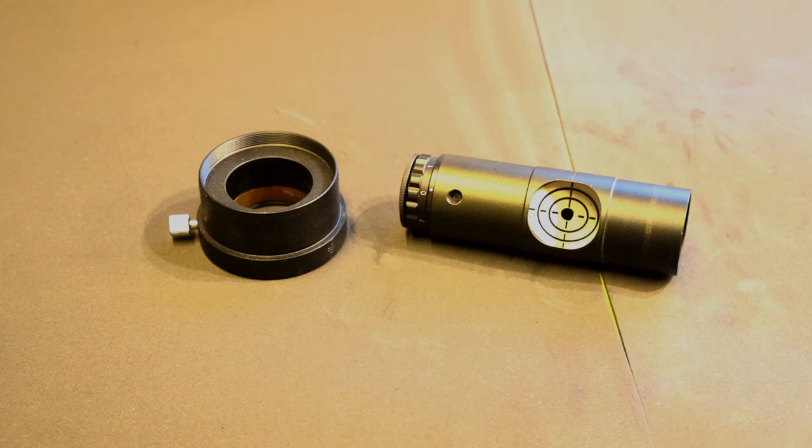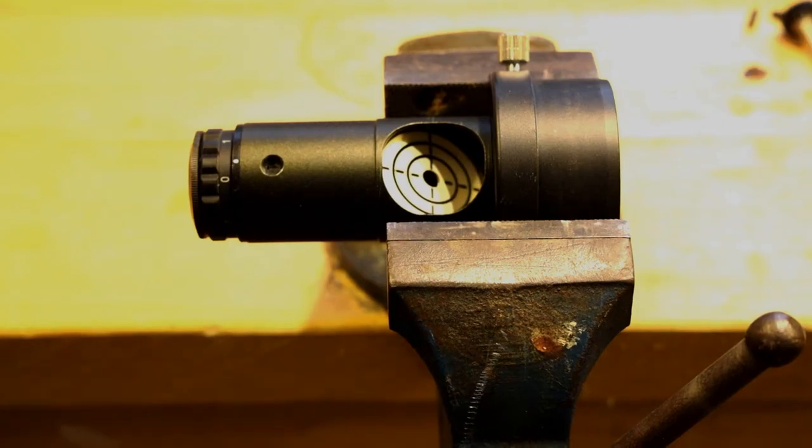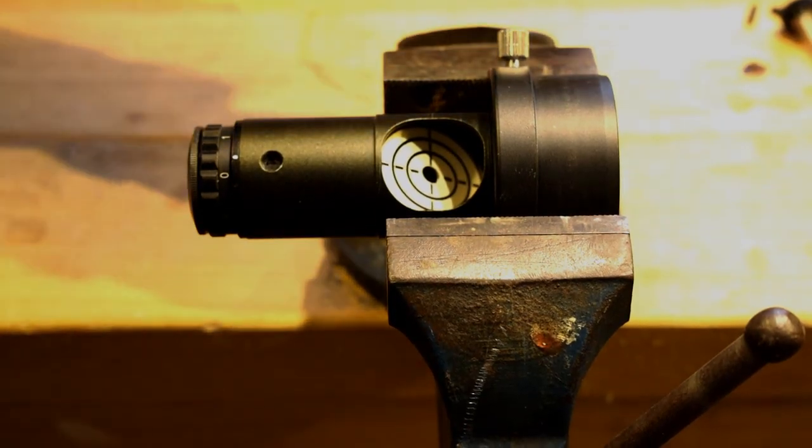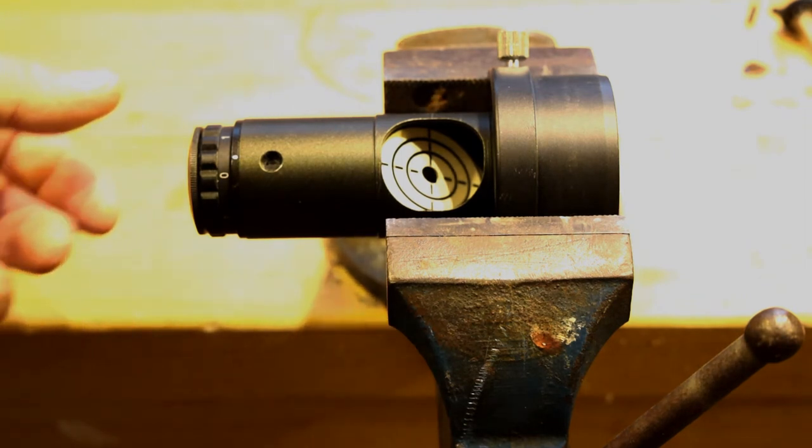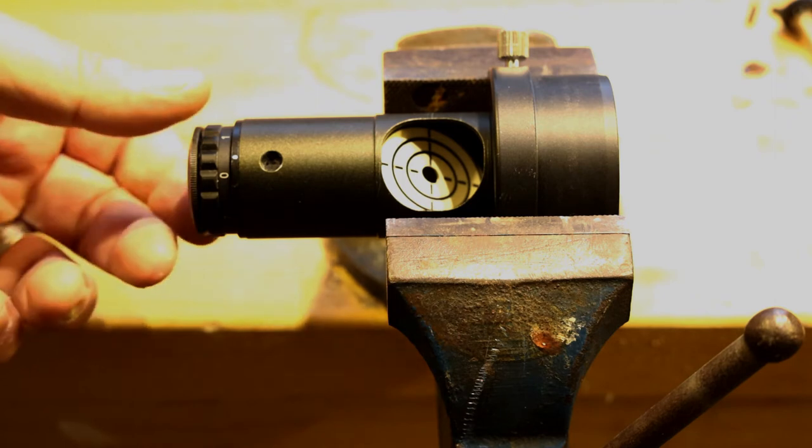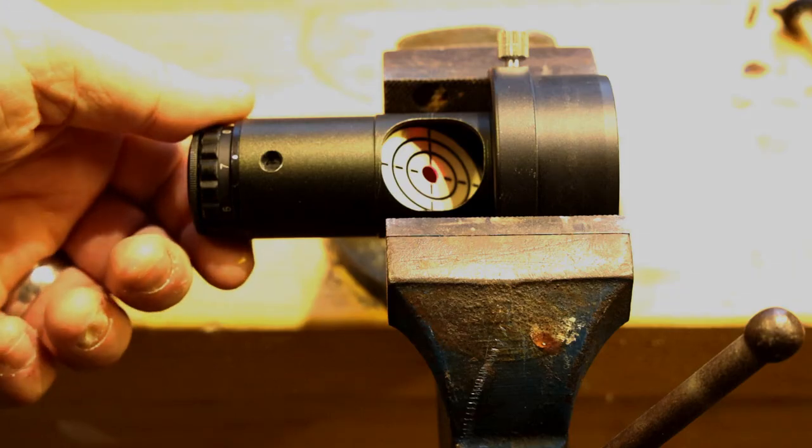So the first thing to do is check that the collimator is true. What we're going to do is fix this into a position pointing at a wall. I use a vice for this and what we're looking to do is get it a good distance from a wall with a point that we can look at. Turn the collimator on and then very slowly rotate the collimator,